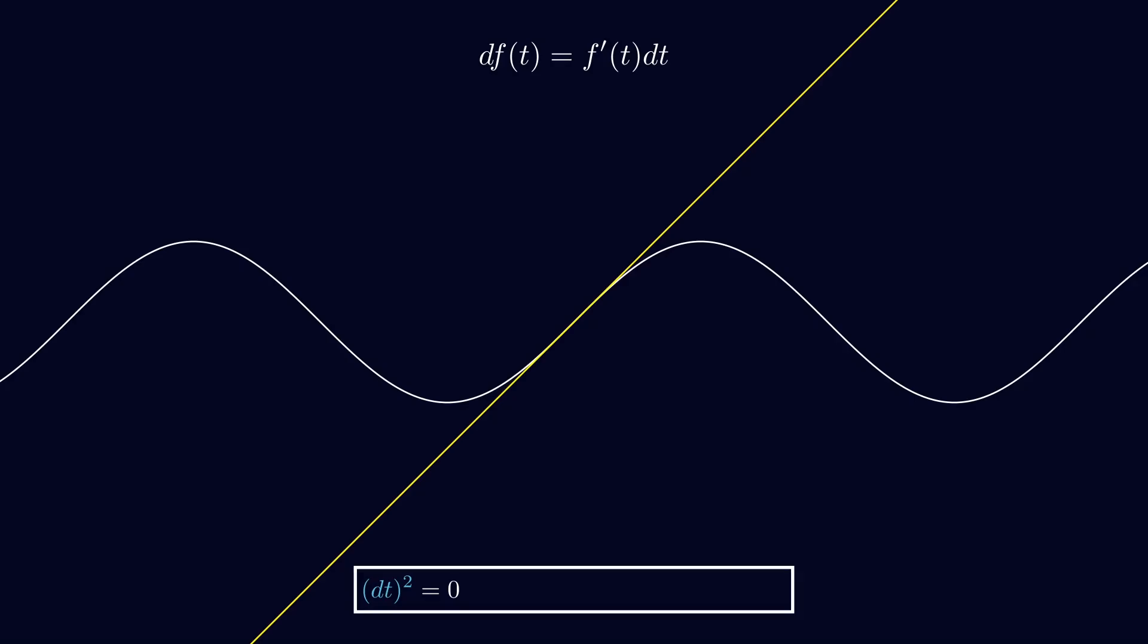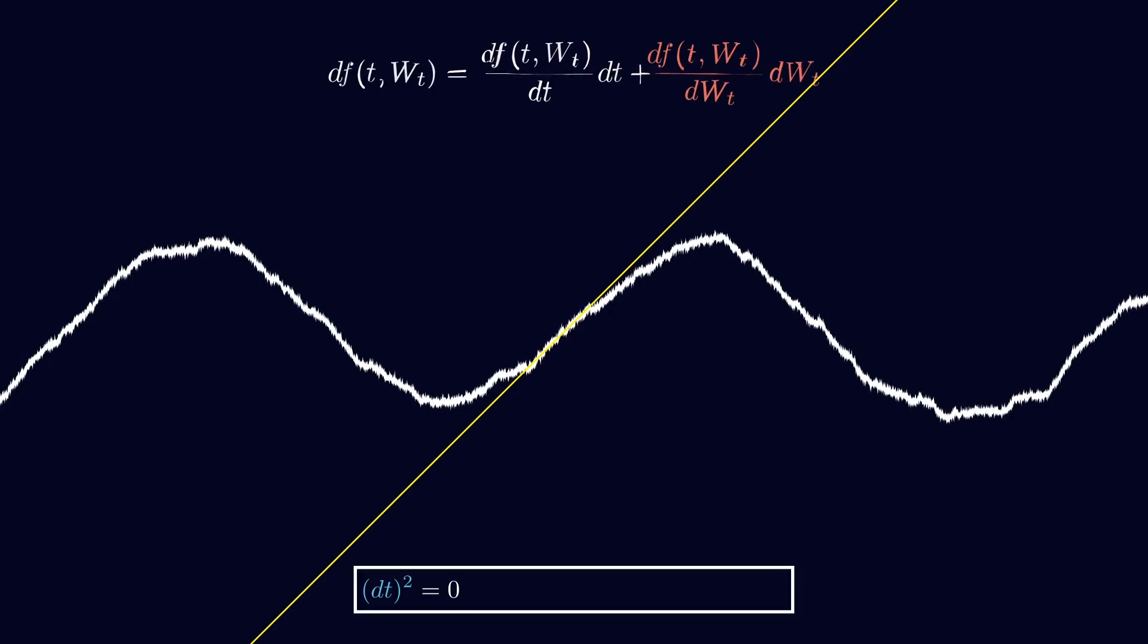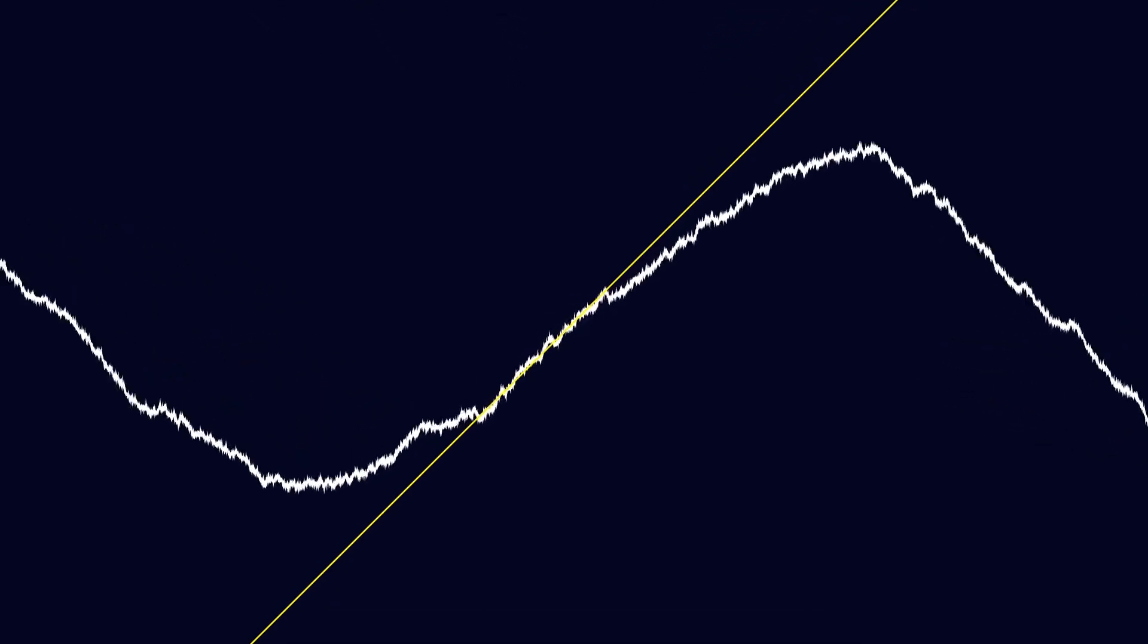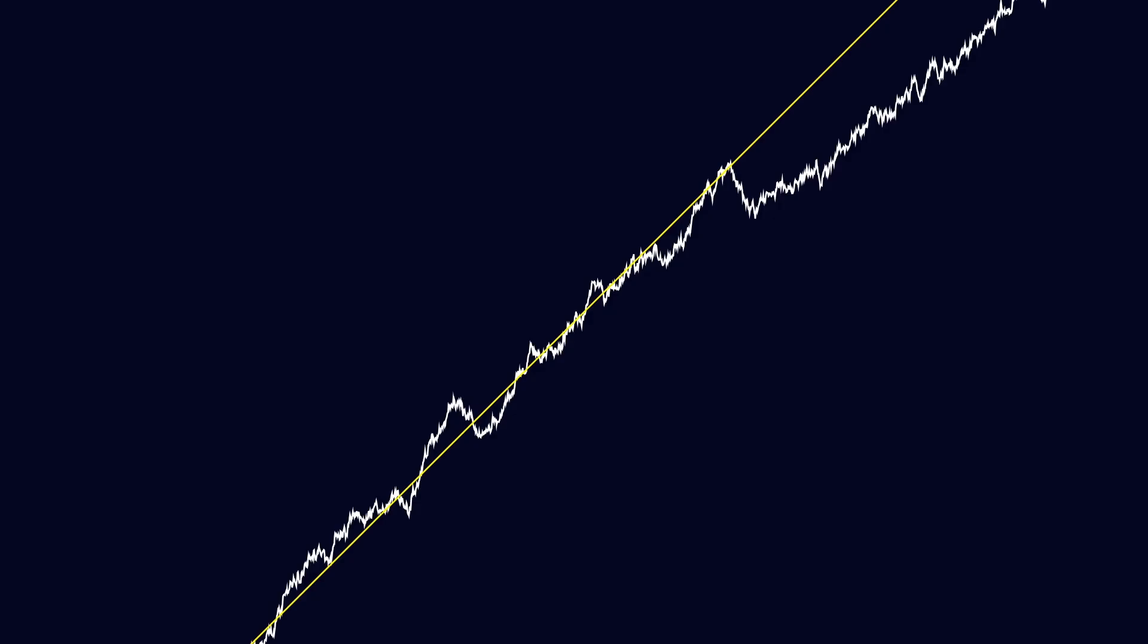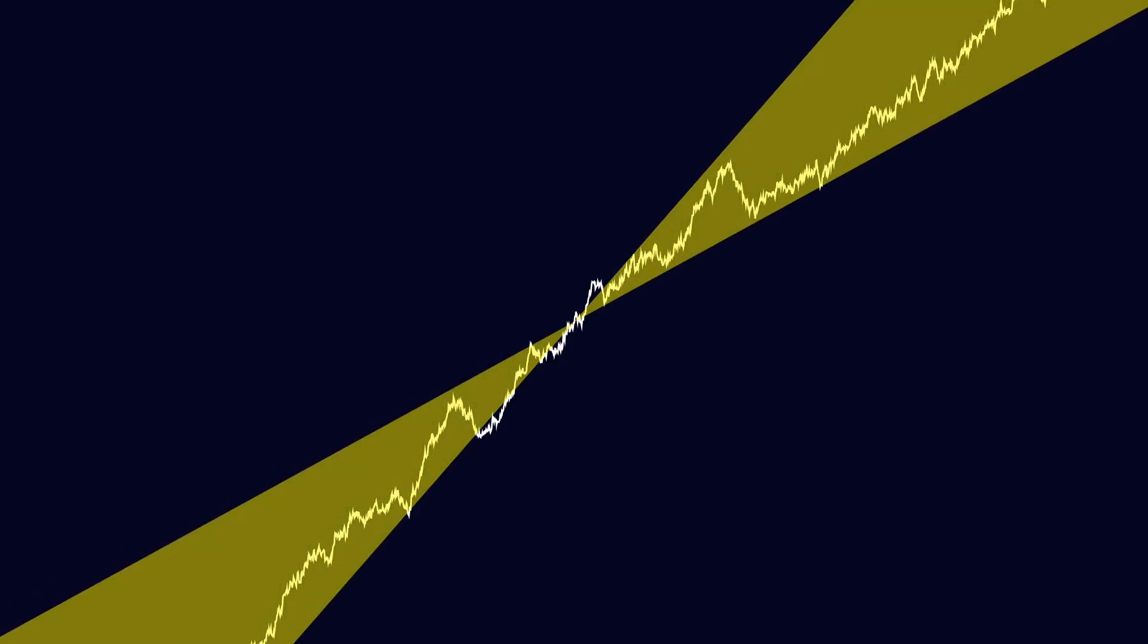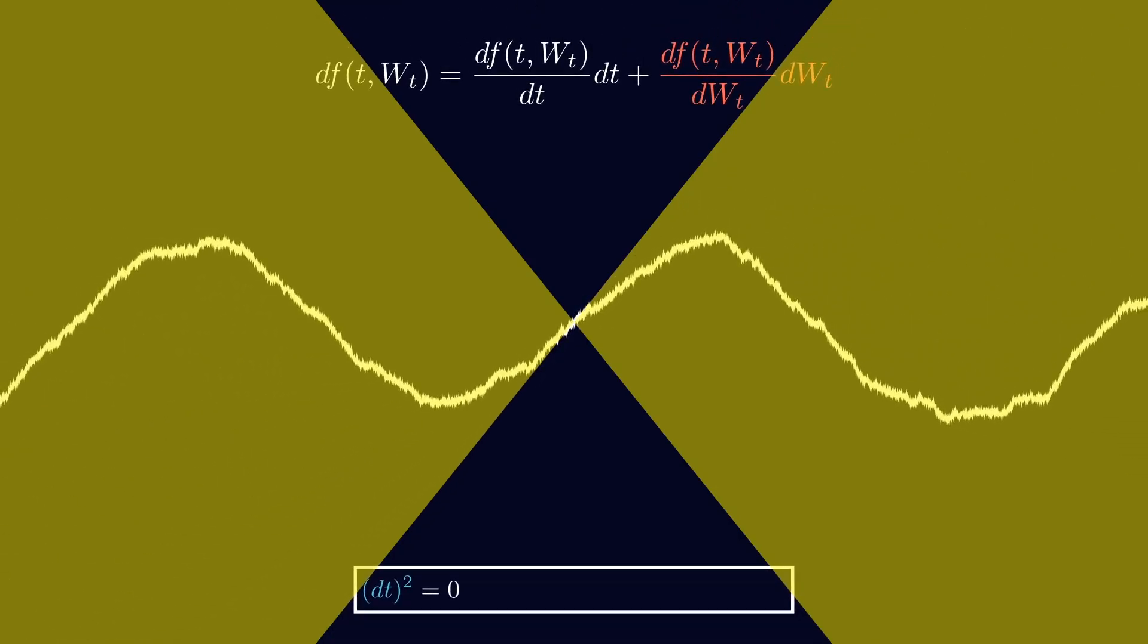Now, we change the setup. Let the function depend on time and also a Brownian motion. Let's zoom again. What you can see is that the straight line no longer captures the local behavior, and when we try different slopes, it still misses. So, the first-degree approximation we used before isn't enough anymore. We have to bring back the second-order terms.